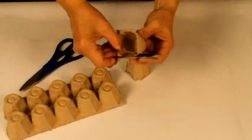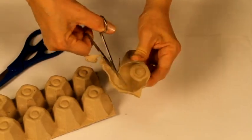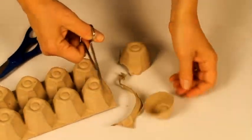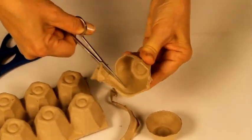To create this spider, you'll need an egg carton. Cut two cells with large scissors and trim the edges with smaller scissors.